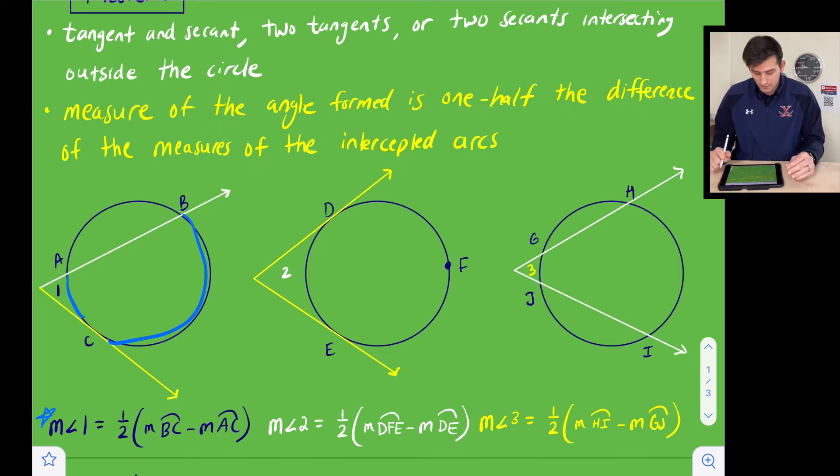Now, if we look at the next diagram here, we have two tangents, and we're going to try to find angle two. So that would just be the measure of major arc DFE minus the measure of minor arc DE, and then we would take half of that. And the last one, we have two secants. So to find the measure of angle three, we would take half of the difference of arc HI and arc GJ.